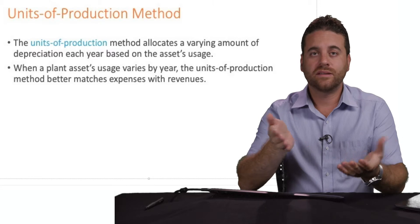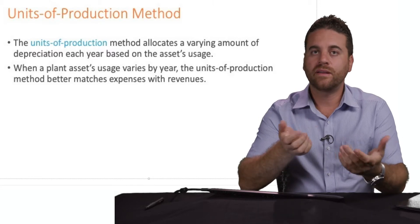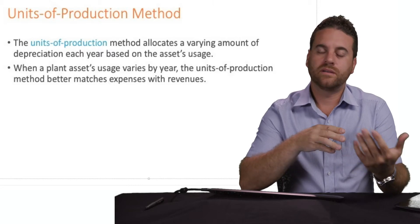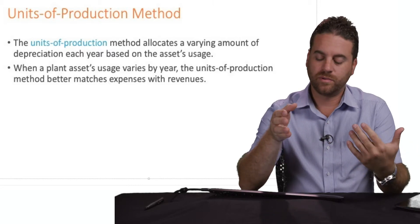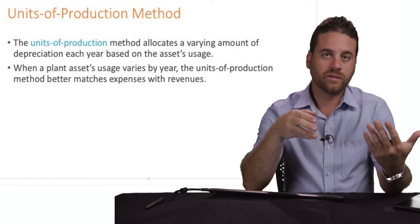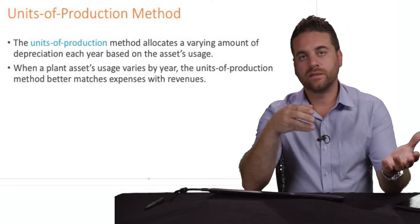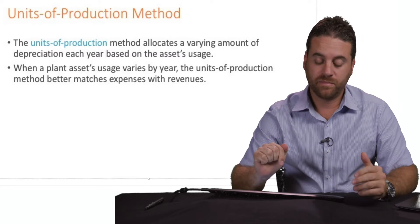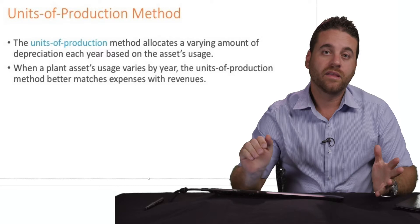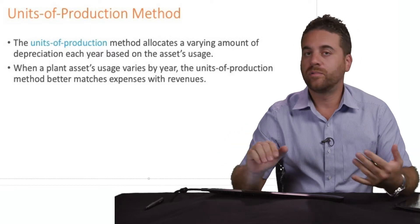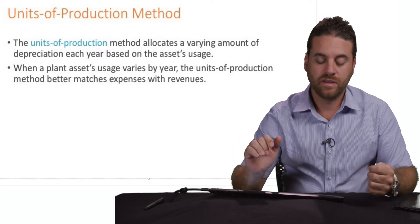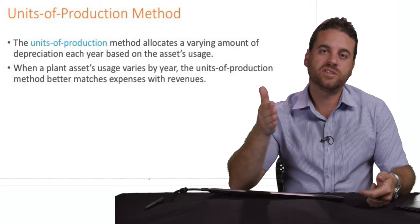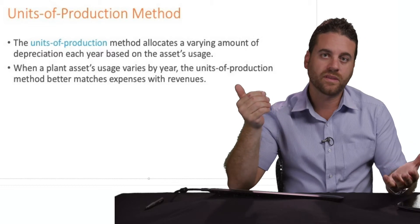A perfect example for that is a car or a van. The more mileage you put on a truck or a car, we can calculate more depreciation. The less we use it, the less depreciation we can record. A machine for a factory, the more machine hours they use it, the more depreciation we can record. So it's not like the straight-line method where you do equal depreciation every year regardless of the usage.